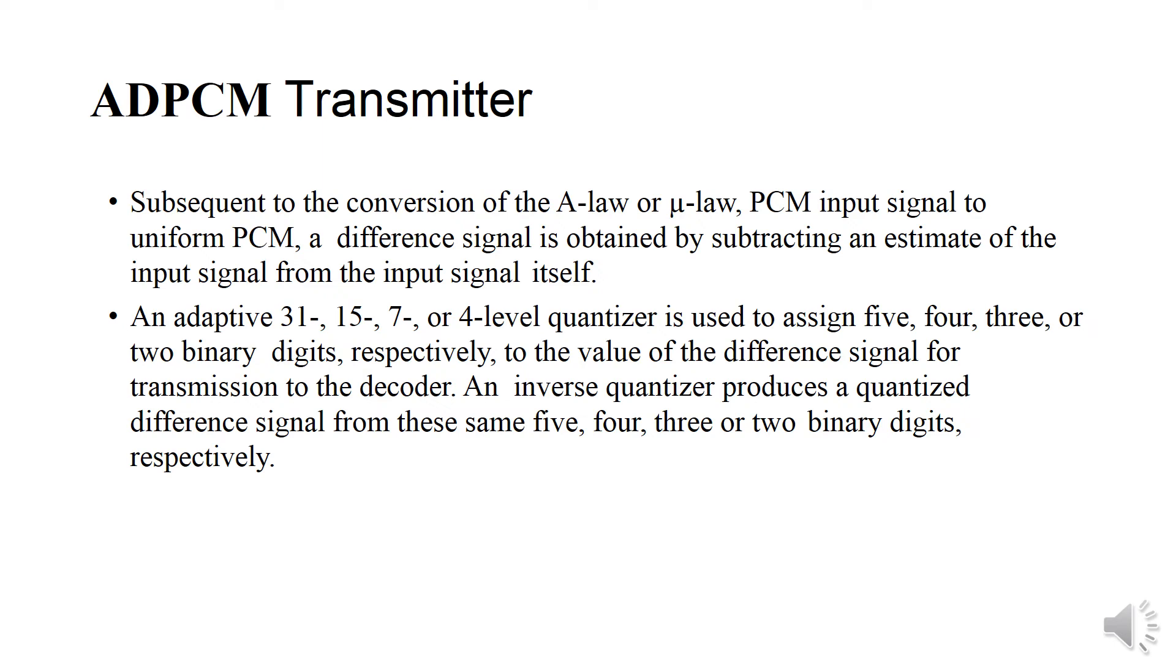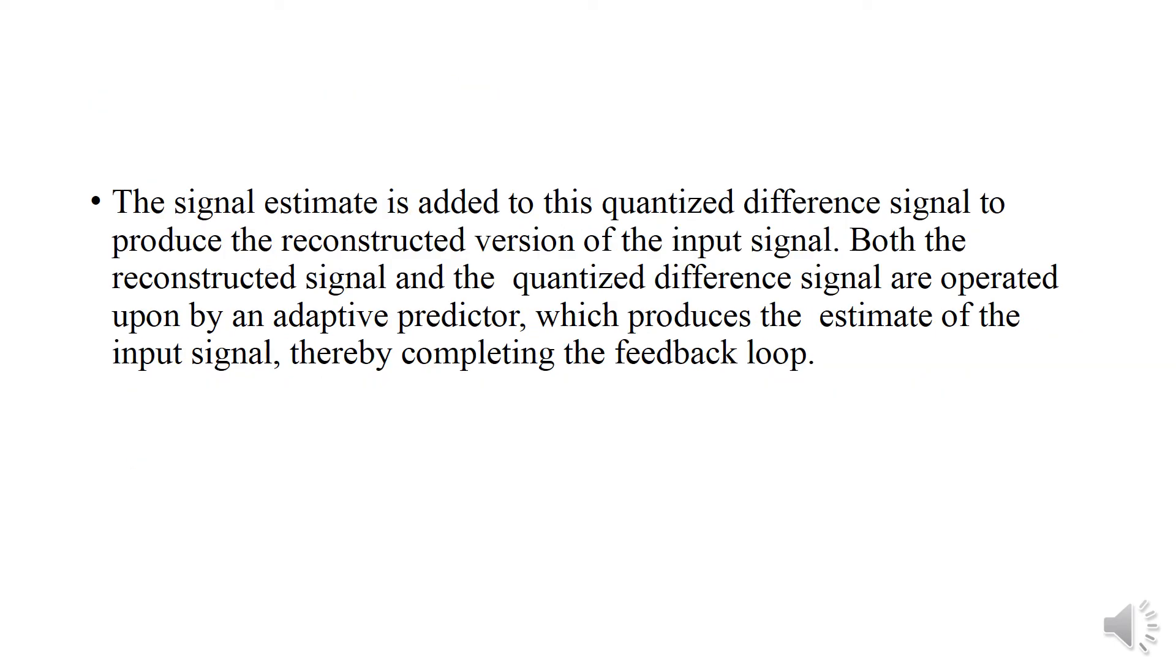An inverse quantizer produces the quantized difference signal from the same 5, 4, 3, or 2 binary digits respectively. This signal estimate is added to the quantized difference signal to produce the reconstructed version of the input signal. Both the reconstructed signal and the quantized difference signal are operated upon by an adaptive predictor, which produces the estimate of the input signal, thereby completing the feedback loop.